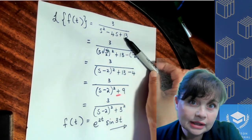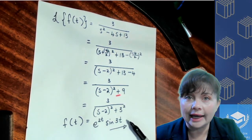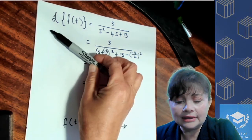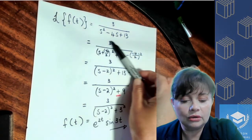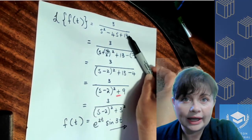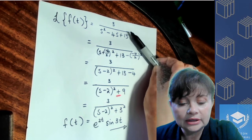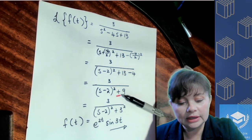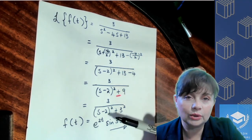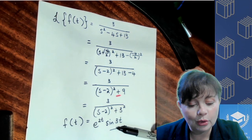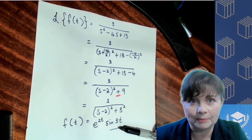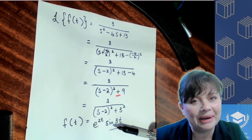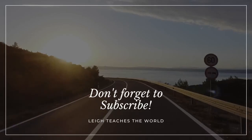So just to recap: we had a function in our frequency domain in terms of s, we converted using the completion of the square method in the denominator, and made sure that our denominator and numerator were in the same form as on our table before applying the inverse transform. I hope that was helpful — I'll see you next time, bye bye.